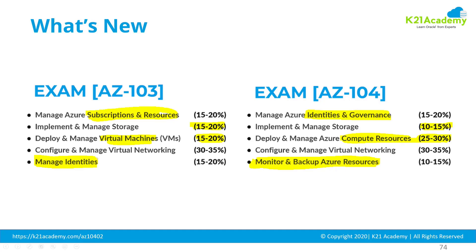In AZ-103, there was a separate topic for Azure subscriptions and resources, and then managed identities covering Azure Active Directory users and groups — each at 15 to 20 percent. In AZ-104, these two topics are combined into a single topic: Manage Azure Identities and Governance, together worth 15 to 20 percent. This means slightly less weightage on subscription resources and basic concepts compared to AZ-103.